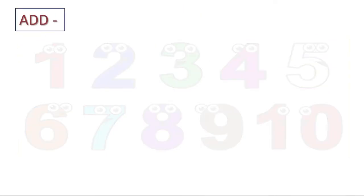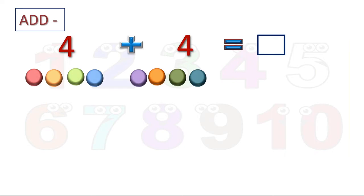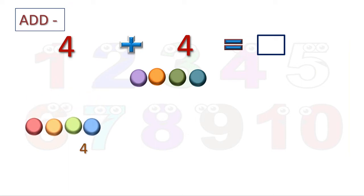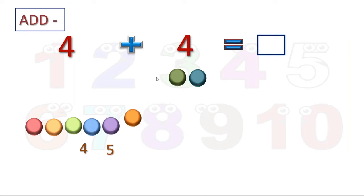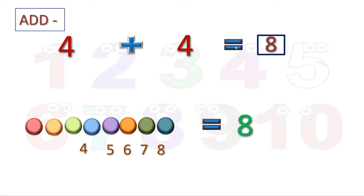Four plus four is equal to how much? You can see four gems, again four gems. Now what we will do? We will count forward. After four, this will become the fifth one, then sixth, seventh, eighth. So all together we got eight gems. Four plus four gives us eight.